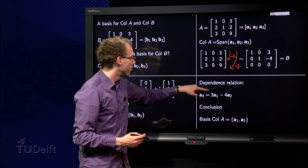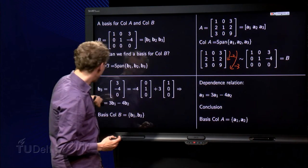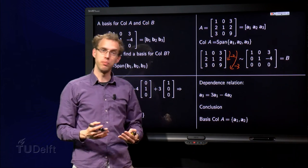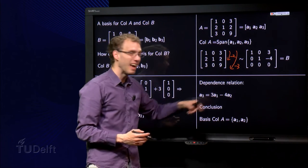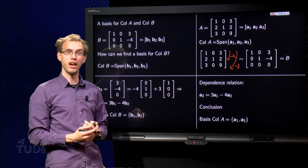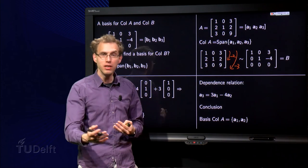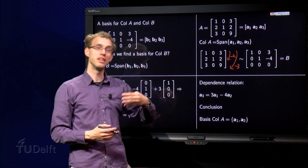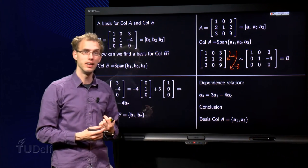So that means if b₃ is a linear combination of b₁ and b₂, then it also means that a₃ is a linear combination of a₁ and a₂. And if b₁ and b₂ are independent, then it also means that a₁ and a₂ are independent.